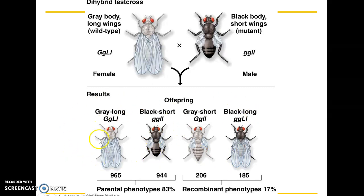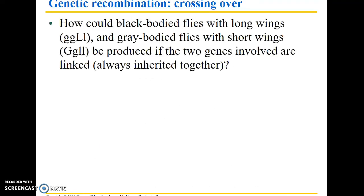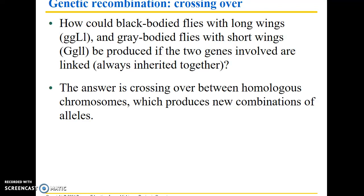Why do so many offspring have the parental phenotypes and so few have recombinant phenotypes, if alleles are always inherited independently? The answer is that these are linked genes — they tend to be inherited together. However, crossing over, which occurs during meiosis, explains why recombinant phenotypes still appear. Black-bodied flies with long wings and gray-bodied flies with short wings are still being produced even though these are linked genes, because crossing over between homologous chromosomes produces new combinations of alleles.